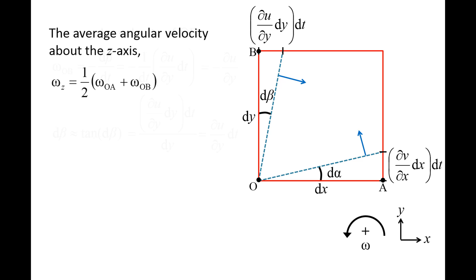We can calculate the average angular velocity of the fluid element about the z-axis, called omega z, by taking the average of omega OA and omega OB. Plugging in the expressions for omega OA and omega OB, we obtain one-half times the quantity partial v partial x minus partial u partial y.